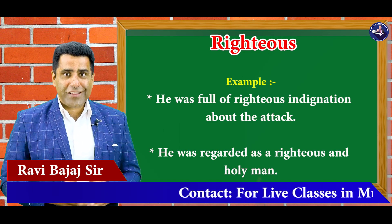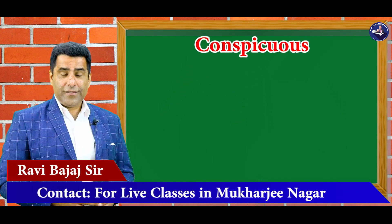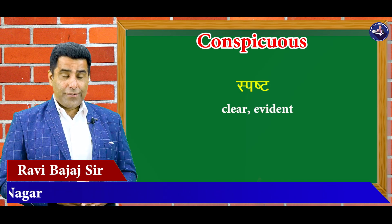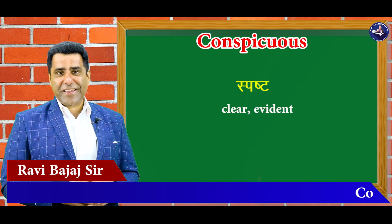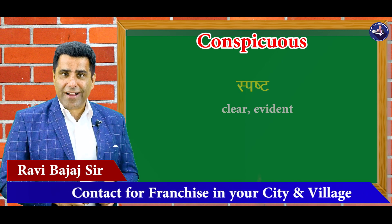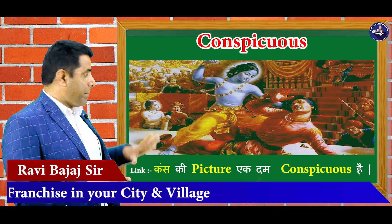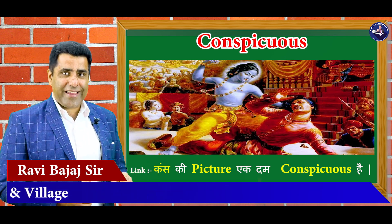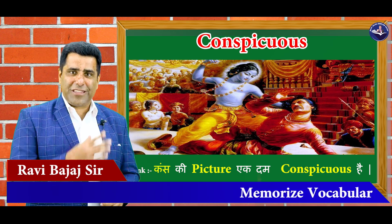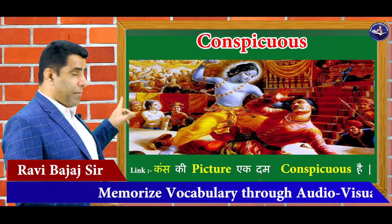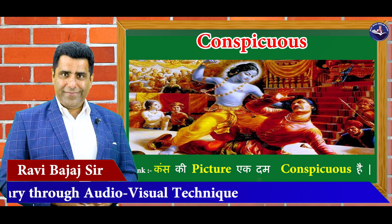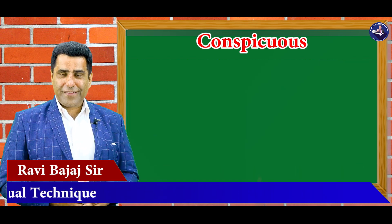So next word is conspicuous — clear, evident. Conspicuous mein ek character hai, Krishna nida ka 'cons'. Aur ye picture Shri Krishna ki hai — toh aakshan toh aapko dikhayi de rahe hain. Aur Consk ki picture bhi conspicuous hai — eakdam clear hai, dekh pa rahe hain aap. Consk ki pic eakdam conspicuous hai, eakdam clear hai.